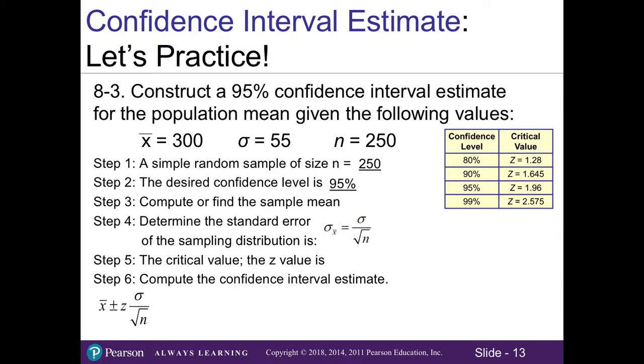Then we need to compute or find the sample mean. In this problem, you're given it at 300. Then for step four, we have to determine our standard error of the sampling distribution. In this case, you take your standard deviation of 55 and divide it by the square root of 250. That gives us a standard error of 3.48.